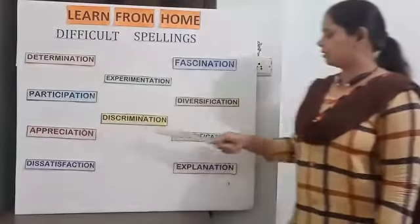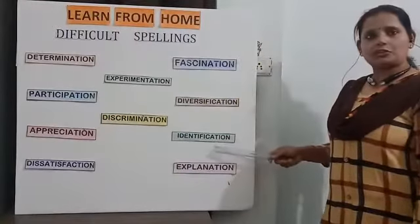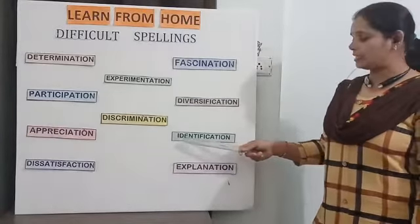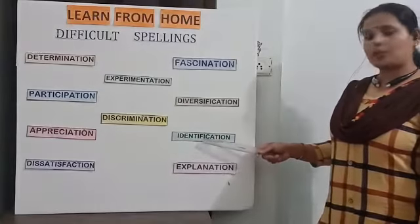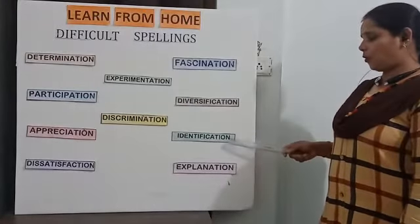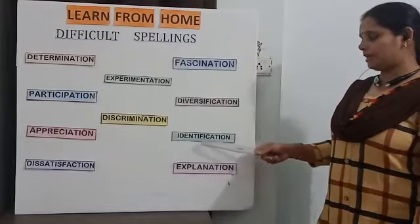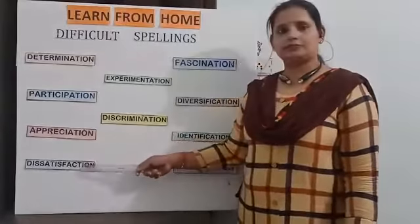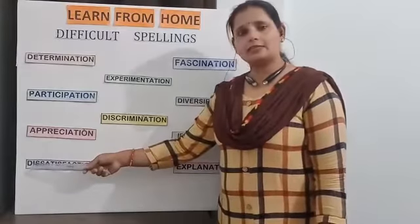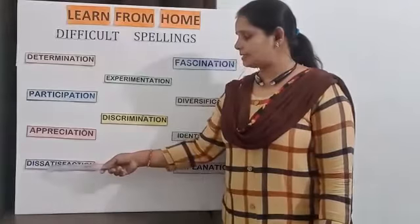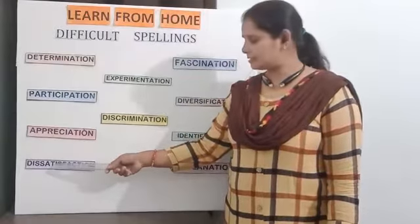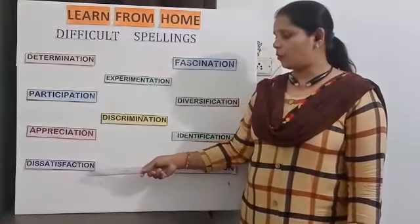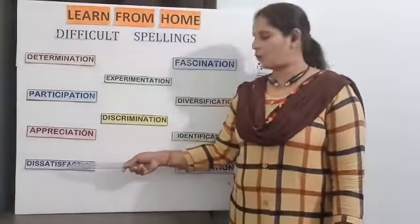Appreciation. Next: identification. I-D-E-N-T-I — 'identi' — F-I-C-A-T-I-O-N. Identification. Then dissatisfaction: D-I-S — 'dis' — S-A-T-I-S — 'satisf' — F-A-C-T-I-O-N. Dis + satisfaction. Dissatisfaction.